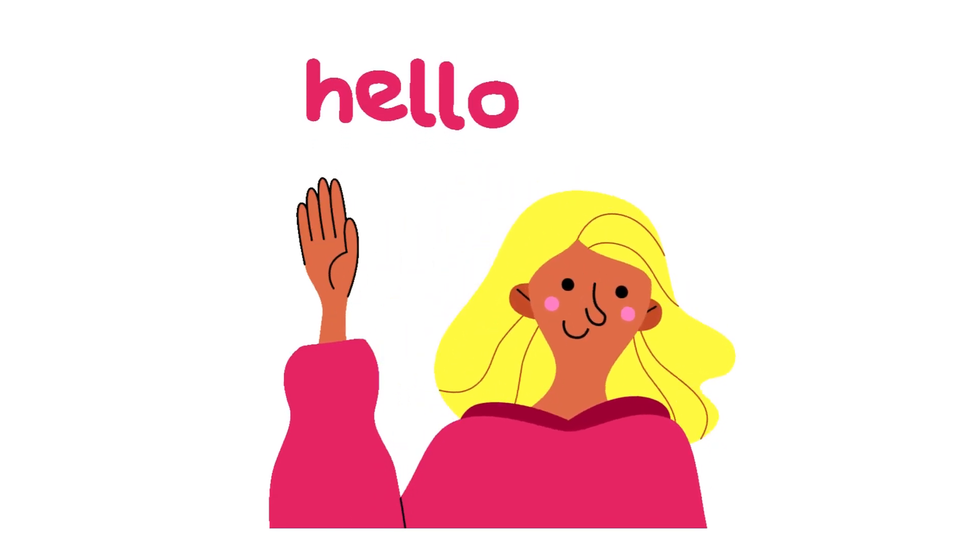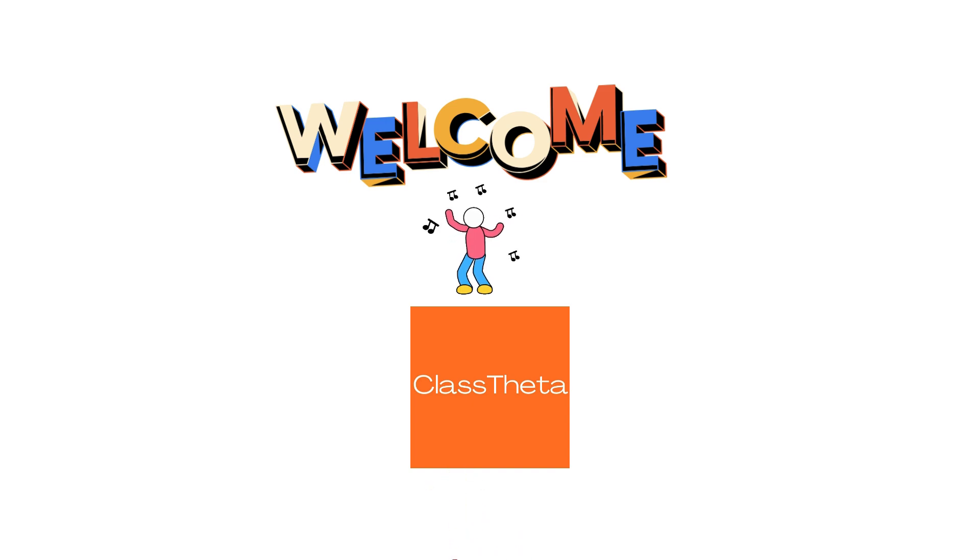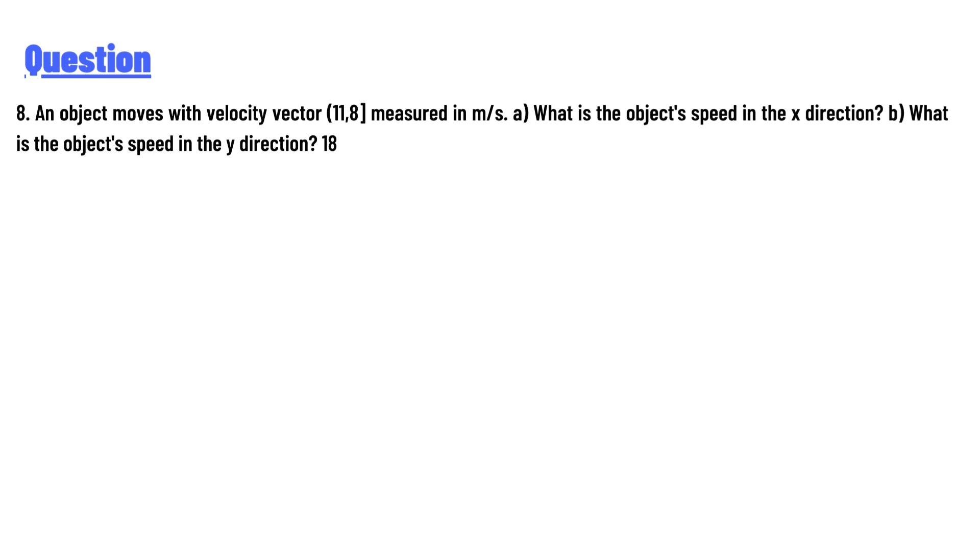Hello everyone, how are you? I am Akrash, your teacher here, and I will teach you different questions and their answers. I welcome you on classtheater.com. Today's question is: an object moves with velocity vector (11, 8) measured in meters per second.